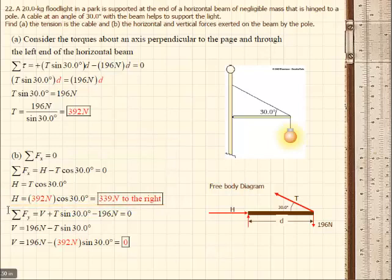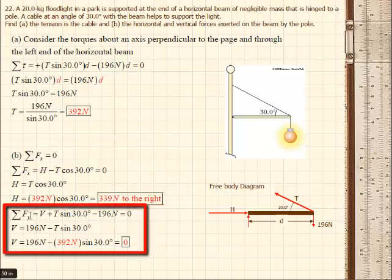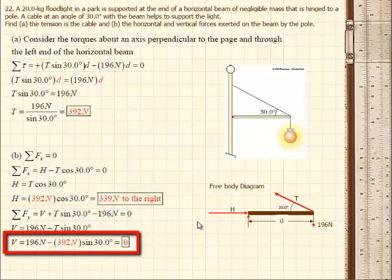Now we switch to summing the forces in the y direction. In doing so, now we take the vertical component, add it to the vertical component of the tension in the cable, times 30 degrees, and solve for the vertical component. So the vertical component is equal to 196, that's the weight of the light, minus the tension times the sine of 30 degrees. And lo and behold, as we sum these values, we end up with a vertical component of zero. So there is no vertical component in this problem.